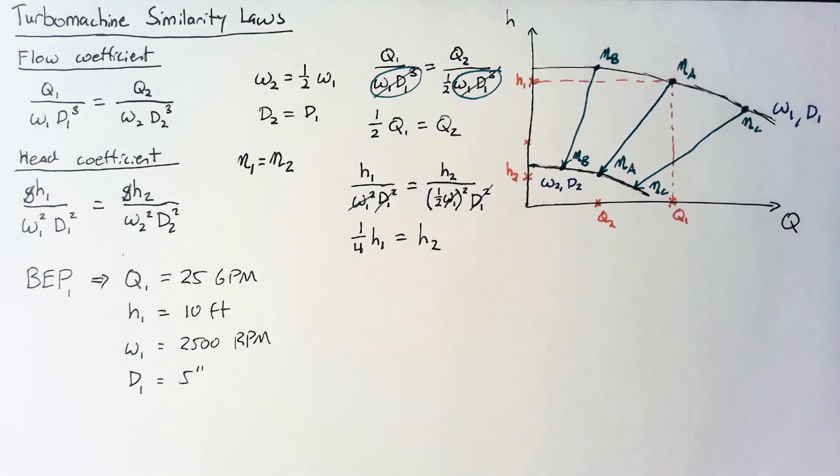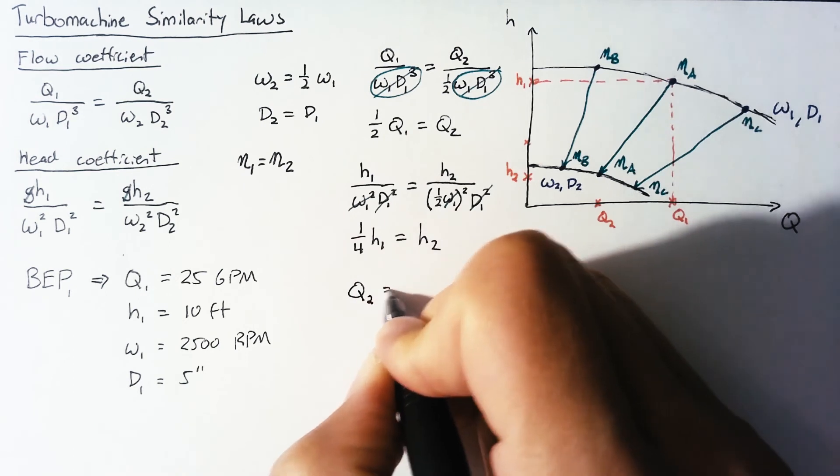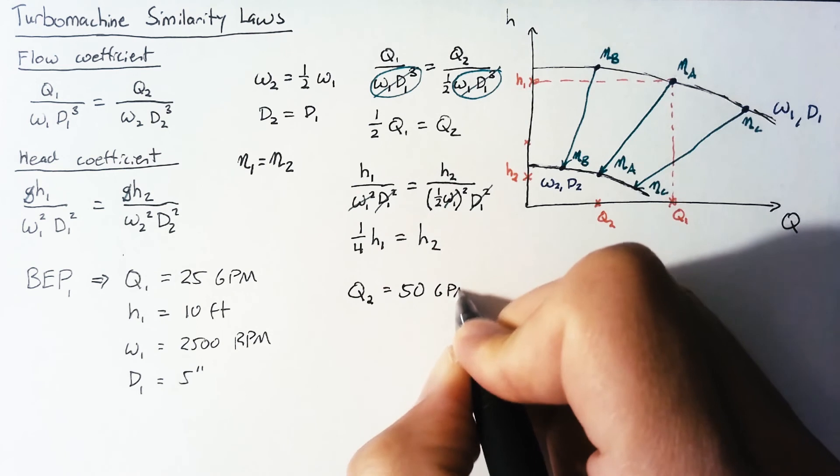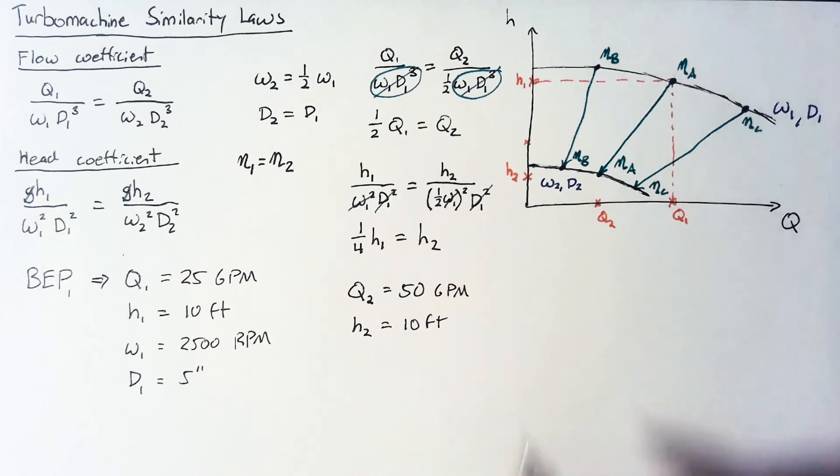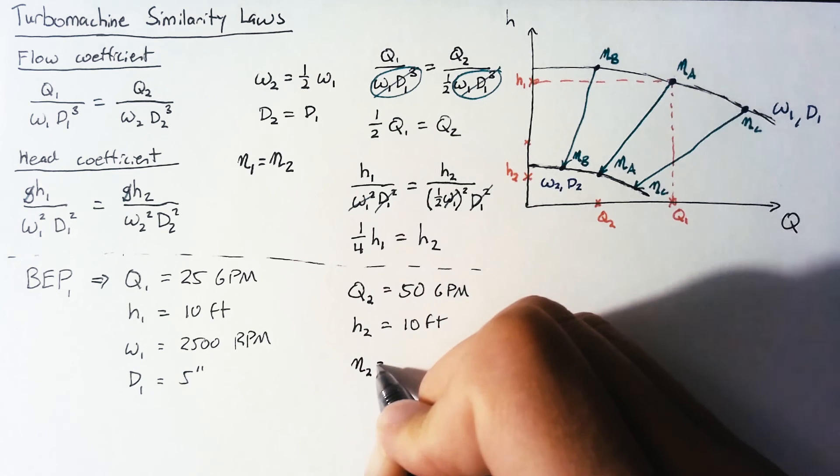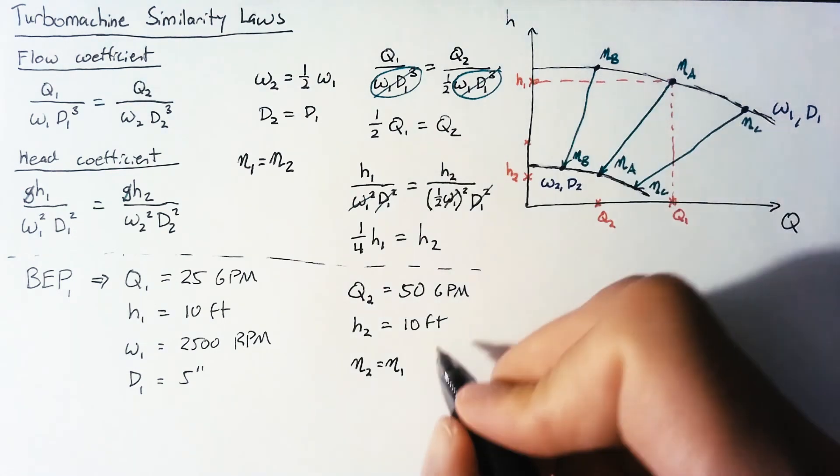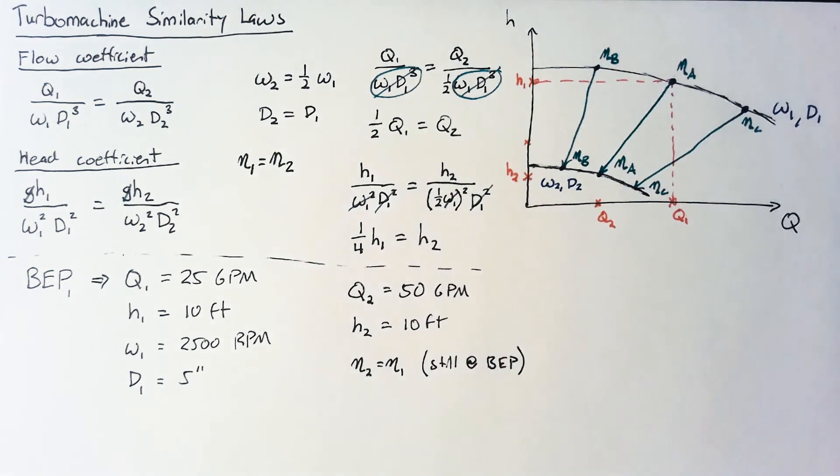What's happening here is that we are going to want to maintain the best efficiency point but our situation is changing and what we're going to try and do is double our flow rate. So our new flow rate is going to be 50 gallons per minute instead of just the original 25 and we want our head to stay exactly the same. And of course our aim here is that we're at the same point on the pump curve meaning that we're following our similarity laws so that we're still at that best efficiency point.